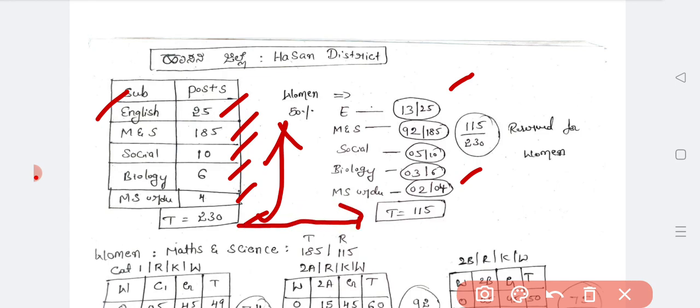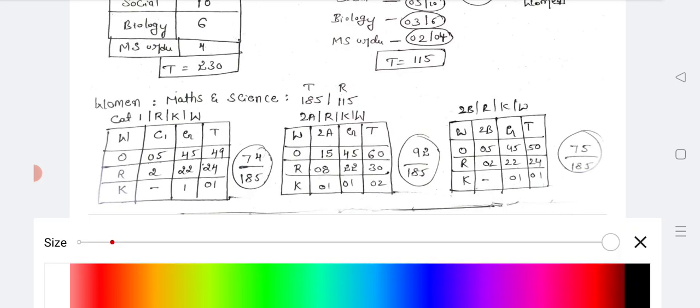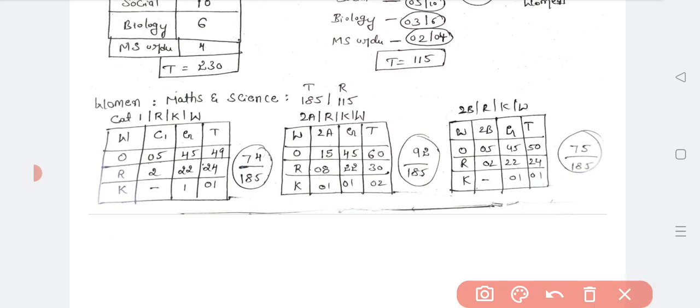So divide by 2 for women's quota. Total 115 seats out of 230 are for women. So the display shows the subjects, and the categories are located. Category-wise depending on the subject, each category is different. Maths and Science women quota total seats are 100. So totally Maths and Science is 185.